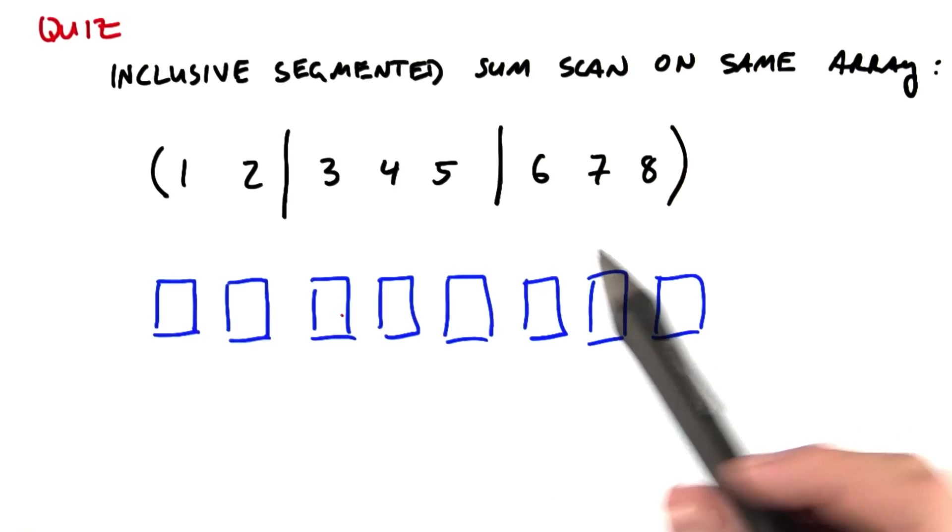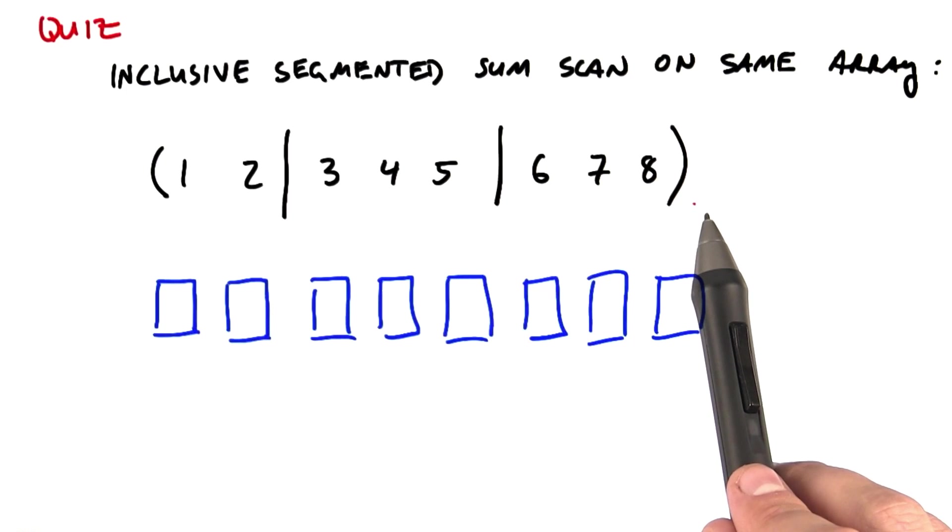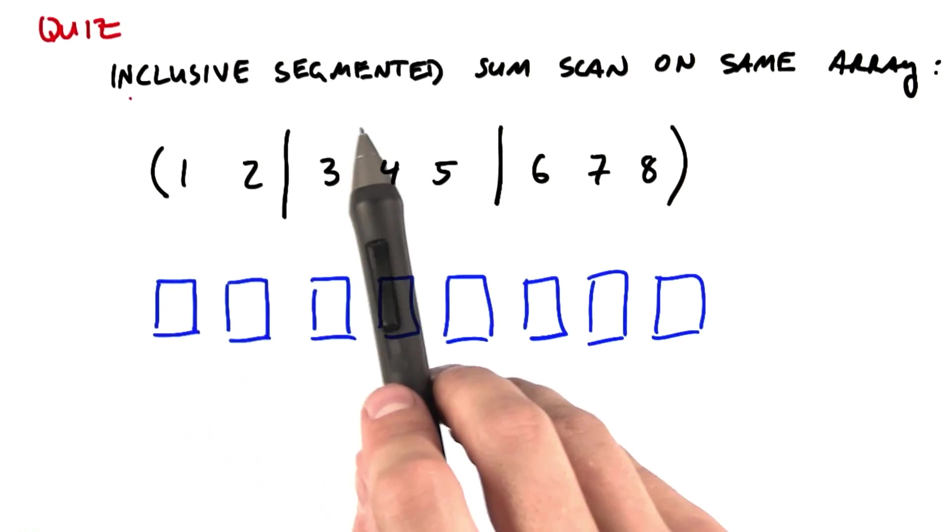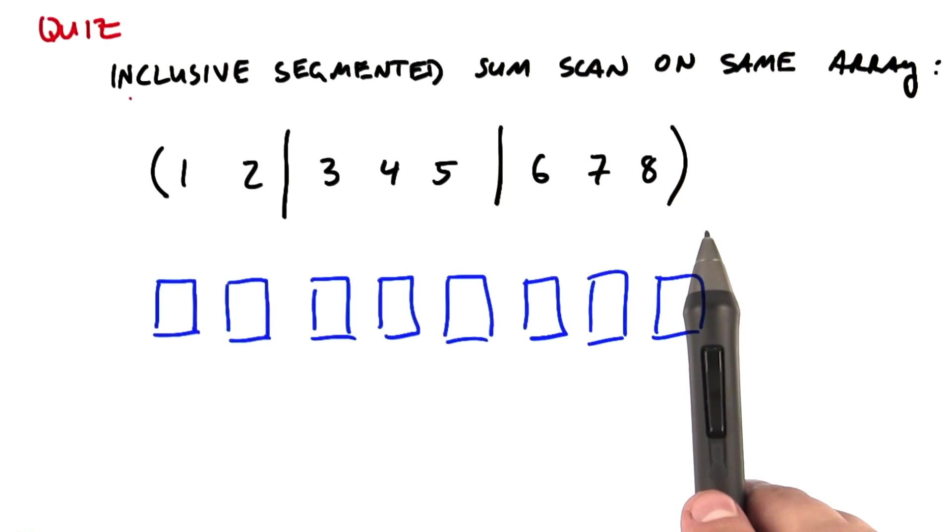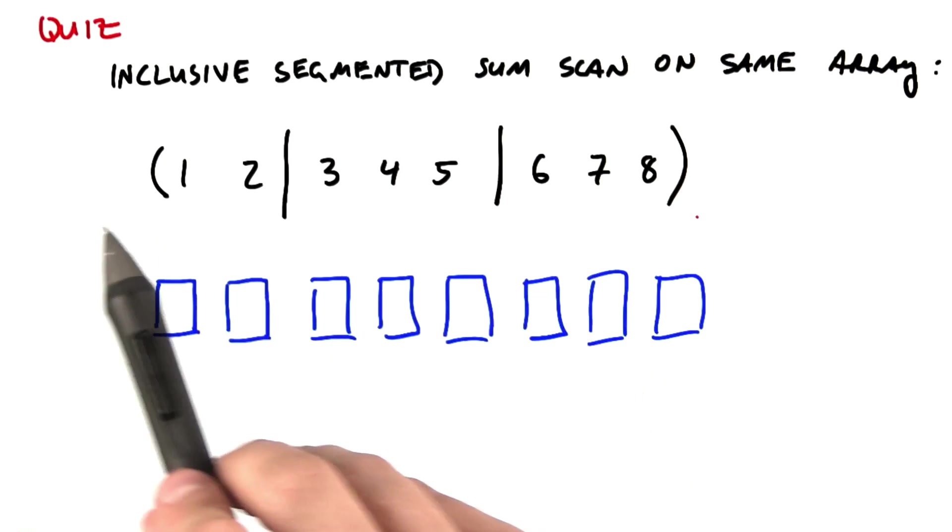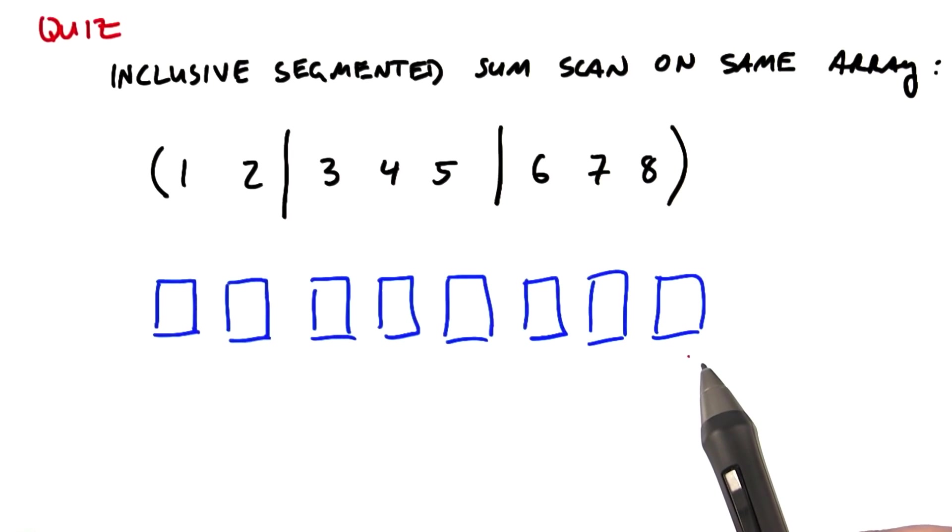So to make sure we're on the same page, we're going to take the same array we did last time where we computed an exclusive segmented sum scan, and instead you're going to fill in the result of an inclusive segmented sum scan on this input array. If you'll recall, an inclusive sum scan is going to be the sum of all elements that came before in the segment as well as the current element. So why don't you fill in these 8 boxes.